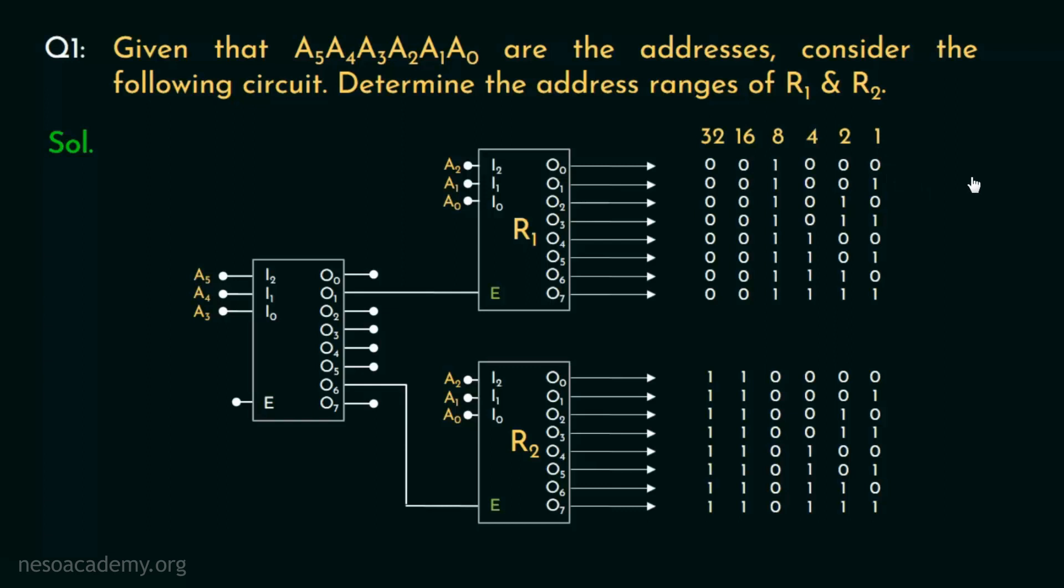So the first address covered by R1 is 8, as we have got 1 underneath 8. And addresses are contiguous in fashion. So the next addresses are 9, 10, 11, 12 till 15. In case of the first address covered by R2, we have got 1s underneath 32 and 16. So the address in decimal is 32 plus 16, that is 48. And sequentially, the next addresses are 49, 50, 51 and the last one is 55.